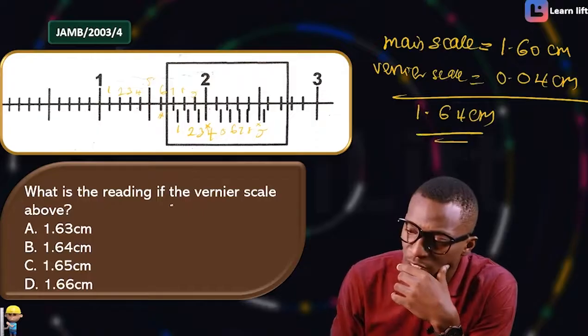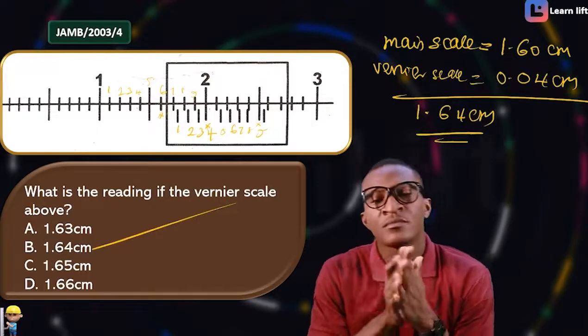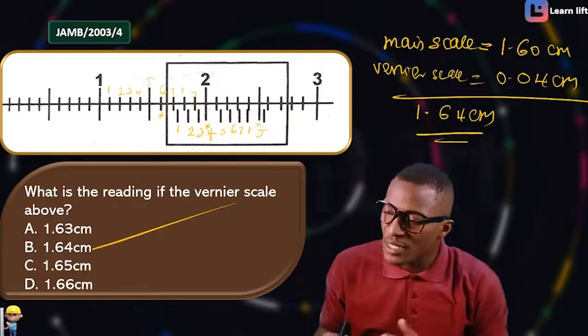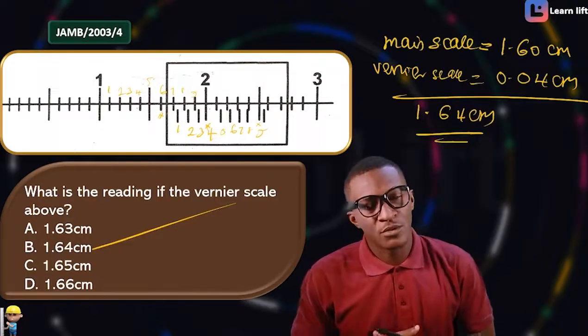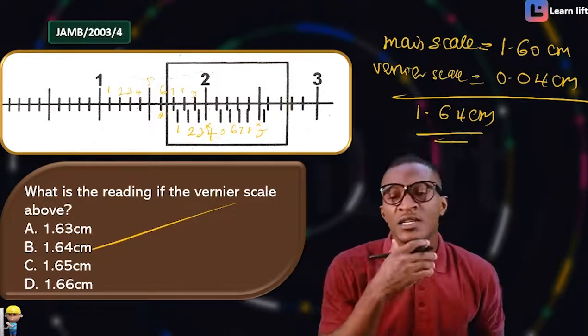1.64 cm — check that against your options. Always read where the main scale meets with the vernier scale.